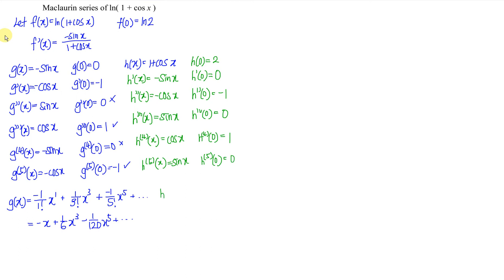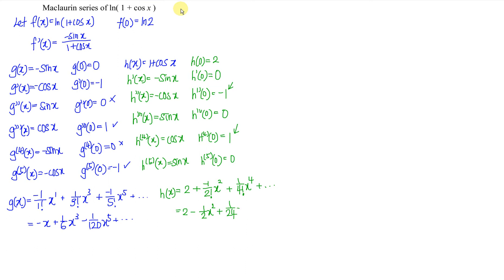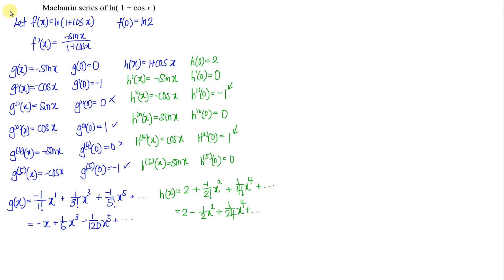We form the Maclaurin series for h(x). The first term is 2 — we divide by 0 factorial which is 1, and times x to the power of 0 which is 1, giving 2. Proceeding to the second derivative which is negative 1: we have negative 1 over 2 factorial times x squared. Then the fourth derivative gives 1 over 4 factorial times x to the power of 4, and so on. So h(x) equals 2 minus x squared over 2 plus x to the power of 4 over 24, and so on.